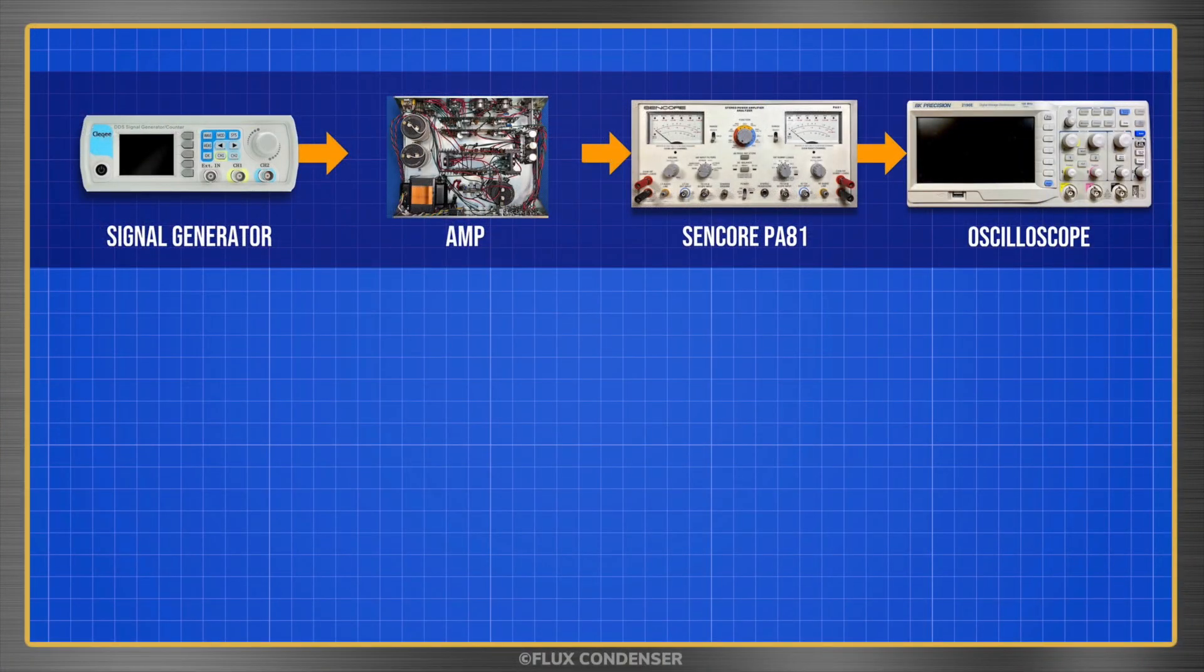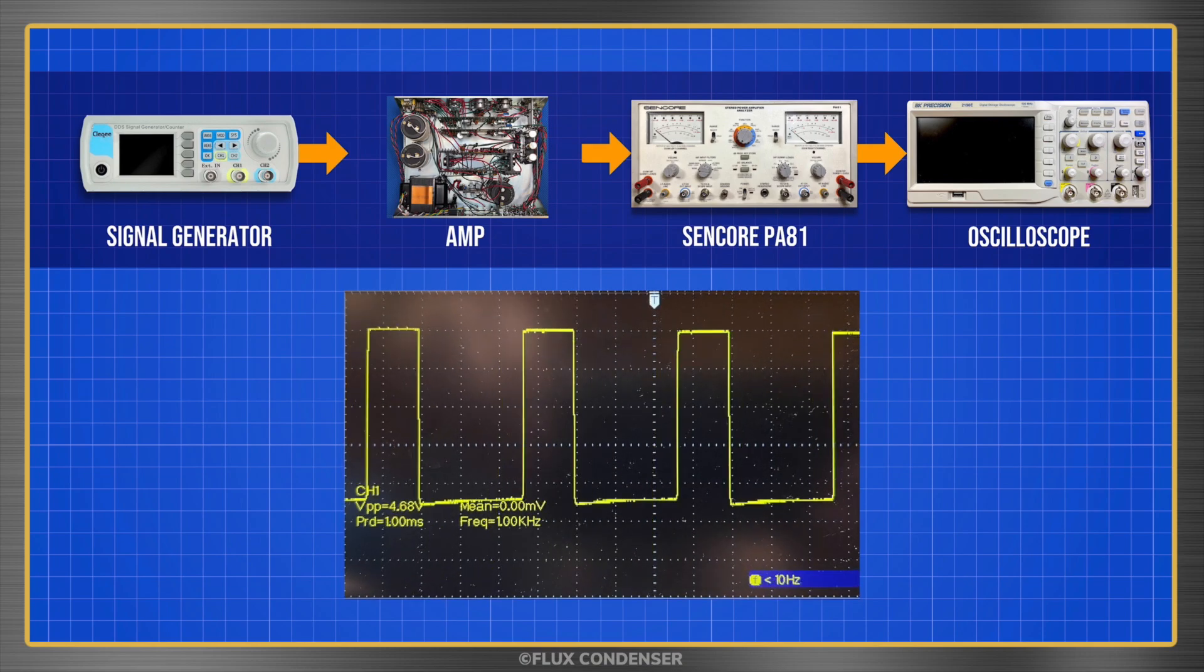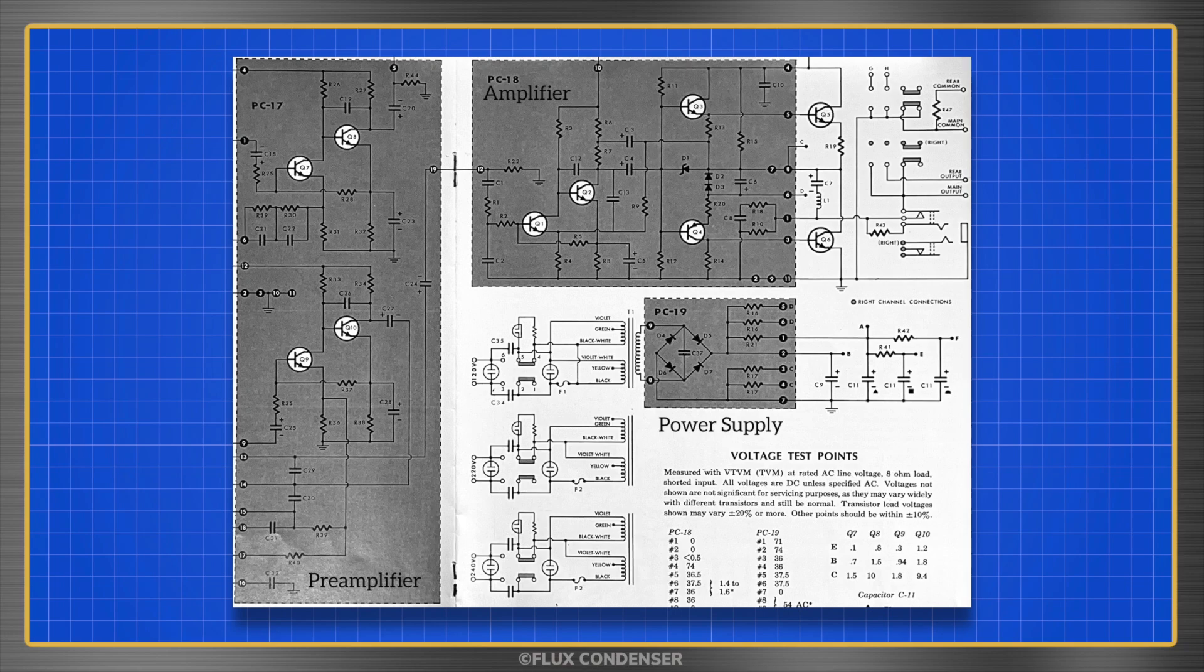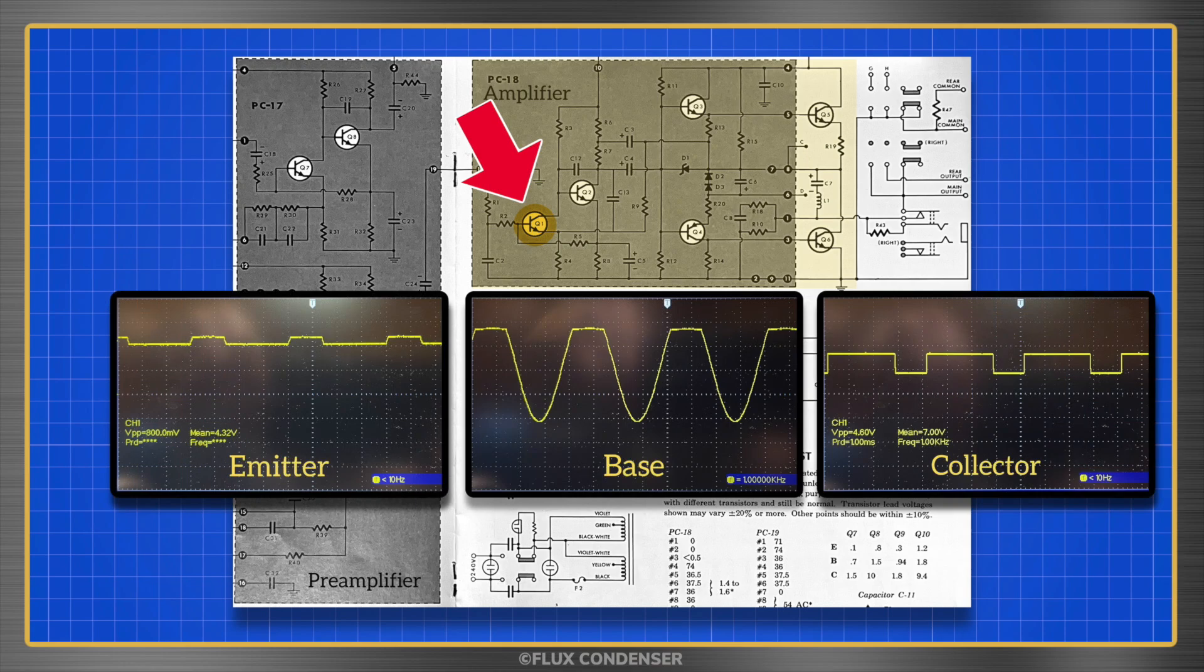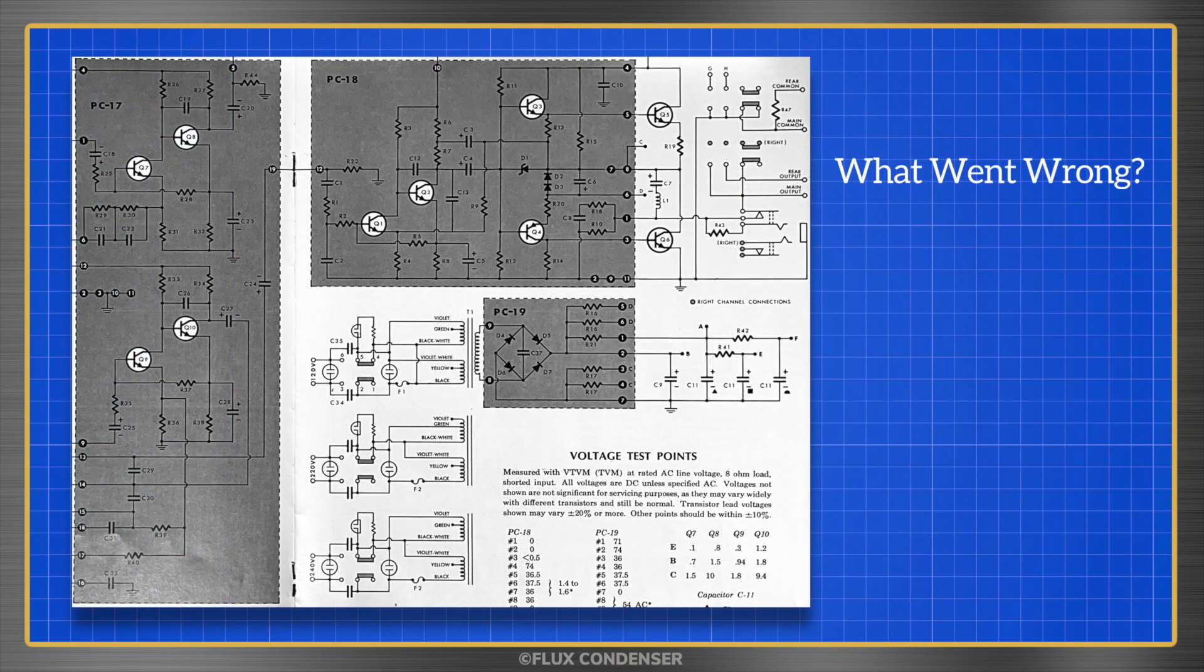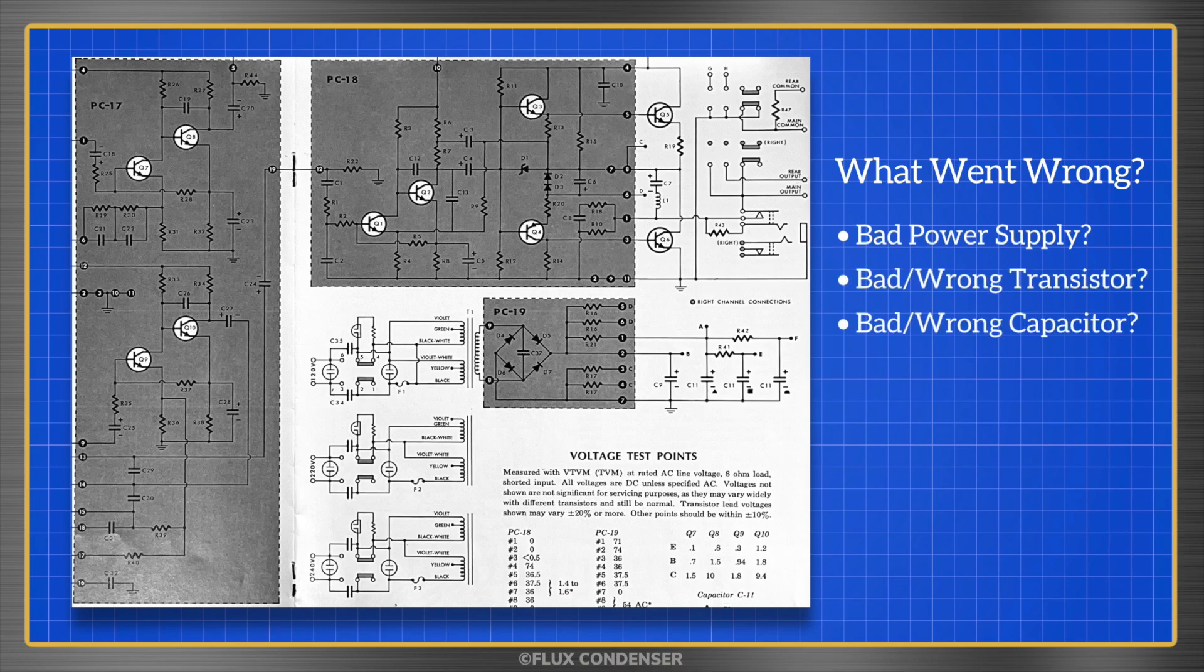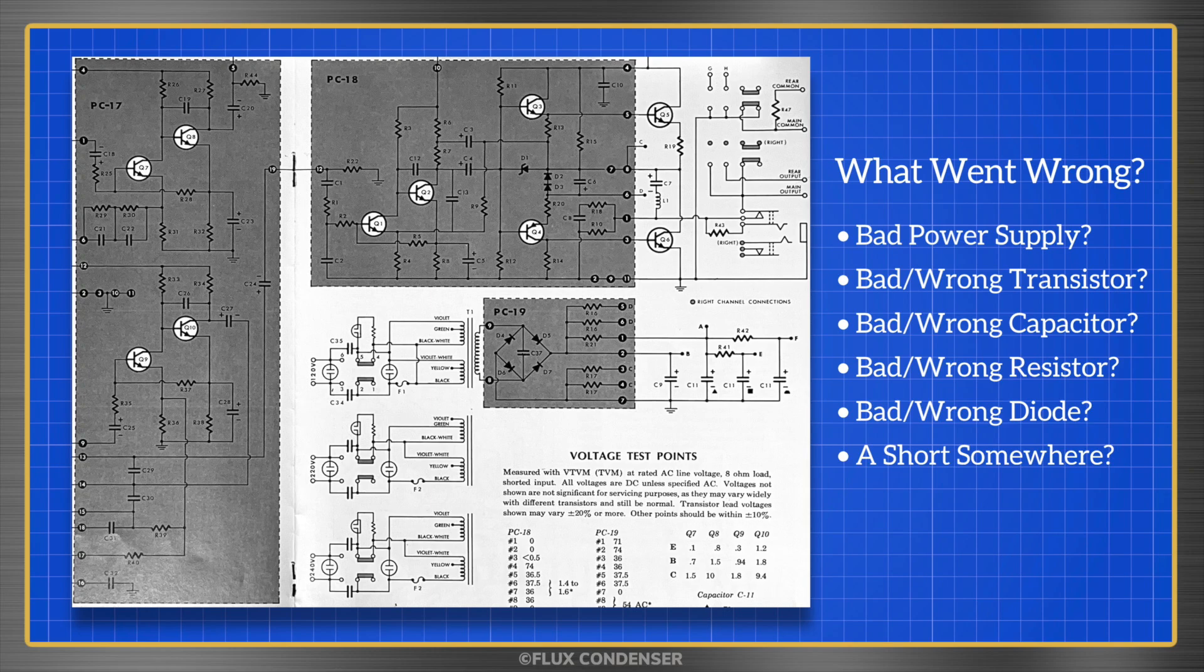It's at this point that I connected the amp to a signal generator, Sencore dummy load and oscilloscope to make sure it was working properly. As I turned up the volume, here's what I saw: severe distortion and no power. After doing some signal tracing, I found the following conditions. There was a clean signal coming out of both preamplifier boards. Under load, the signal on both amplifier boards at each transistor was distorted. At Q1, the first transistor in the amp boards that the signal encounters, these were the scope readings at the emitter, base and collector. There was a clean signal coming from the headphone jack, but when a headphone was plugged in, the right speaker switched off as it should, but the left did not. Based on this evidence, what do you think went wrong? A bad power supply? A bad or wrong transistor? A bad or wrong capacitor? A bad or wrong resistor? A bad or wrong diode? Or a short somewhere in the amp? Let me know your guess in the comments, and if you get it right, I'll announce your name in the next episode. Stay tuned!